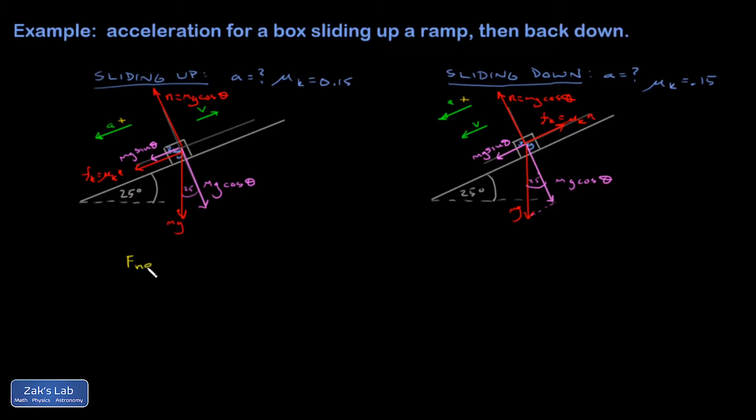And that means these two forces are positive. So I start doing my application of Newton's second law. So f net equals ma. And the two forces in the parallel direction, so I could call this like the x direction. The two forces in the parallel direction are mg sine theta.